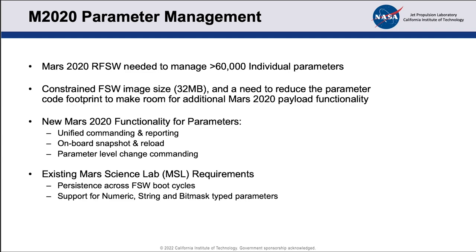Moving on to Mars 2020 parameter management. We inherited all of our software from the MSL Mars Science Laboratory project, and then we obviously changed that for the Mars 2020 surface mission, which is very similar but has a lot of differences. We knew at the start we had to manage over 60,000 individual parameters, spread across the entire flight software in 100 or so modules. We had a constrained flight software image size of 32 megabytes, and we wanted to reduce the code footprint the parameter system took to make room for additional payload functionality in Mars 2020.